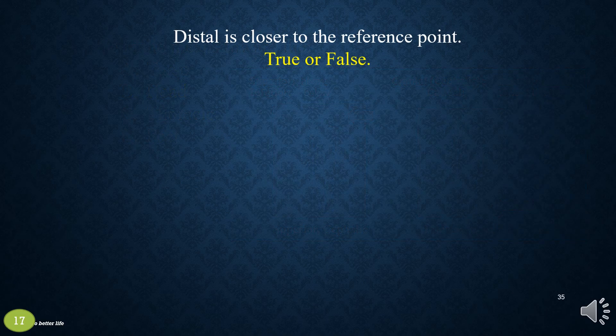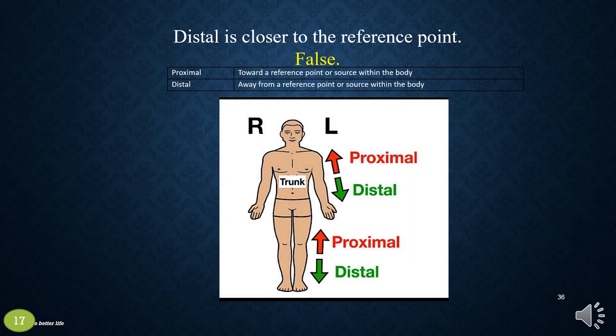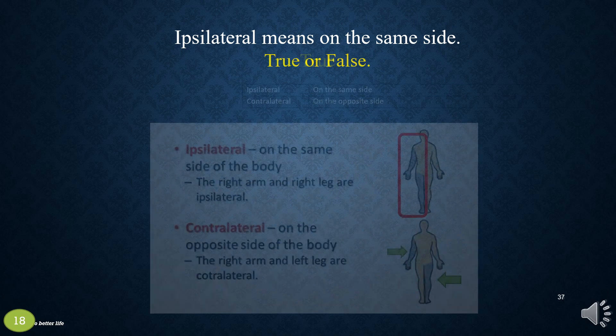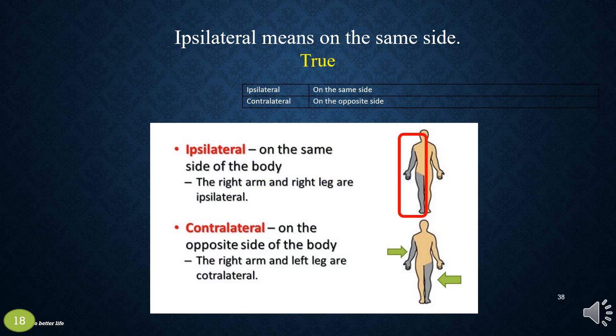Distal is closer to the reference point. True or false? False — distal is away from a reference point or source within the body. Ipsilateral means on the same side. True or false? True.